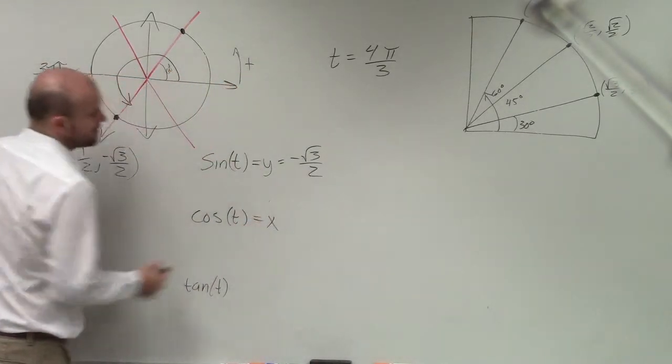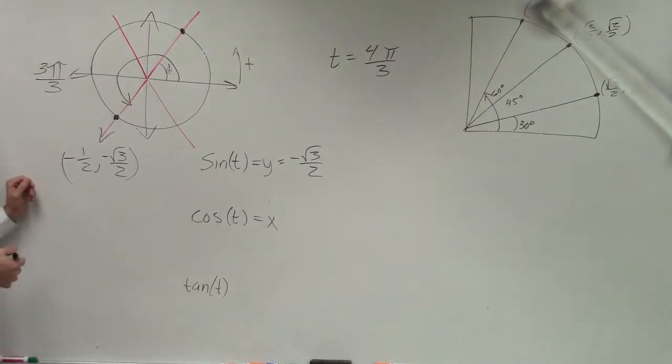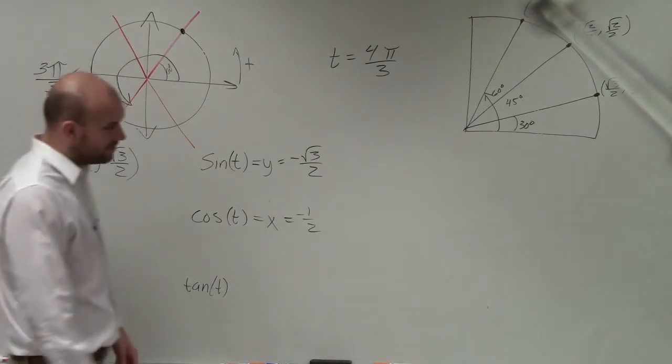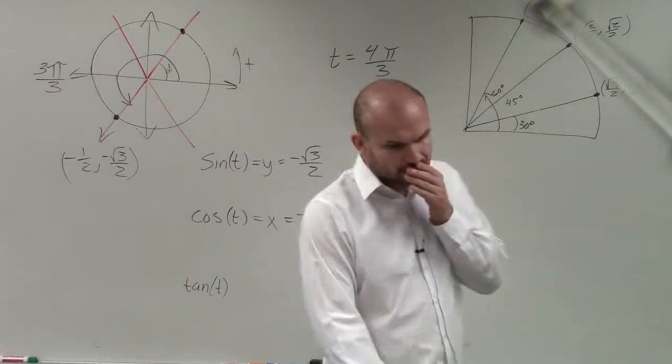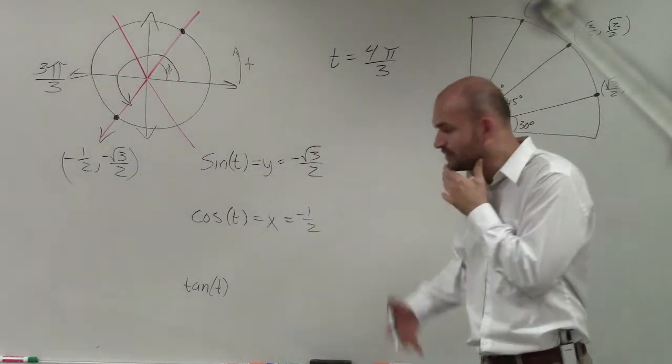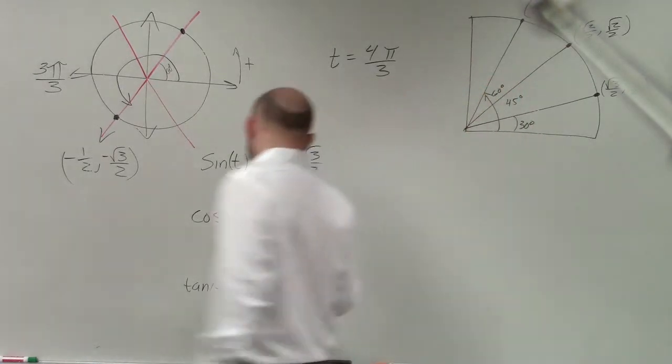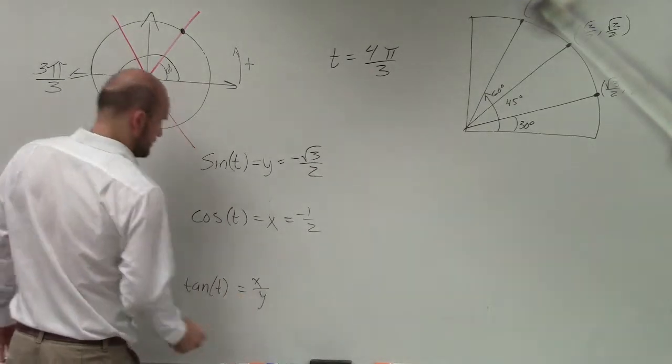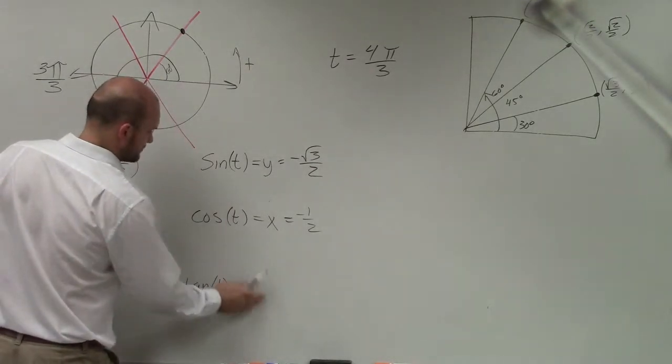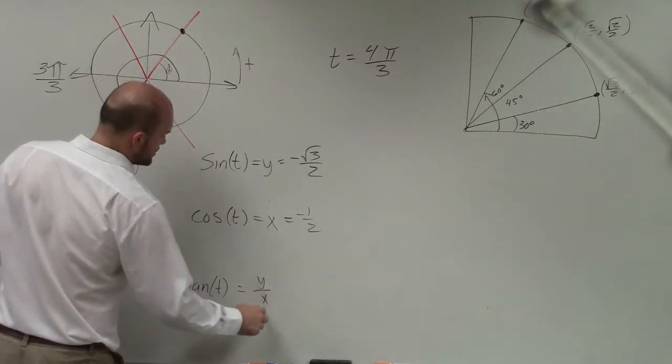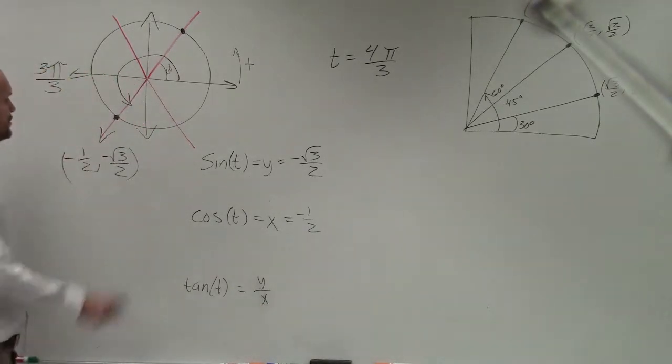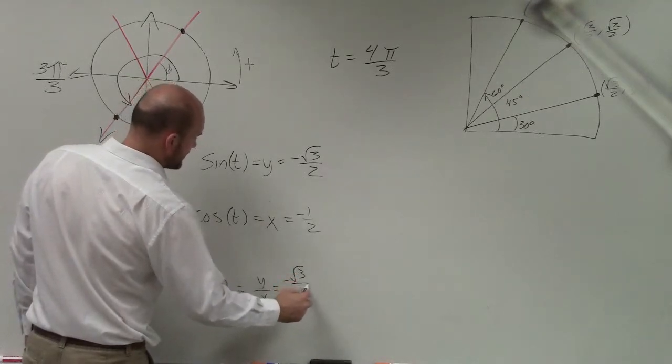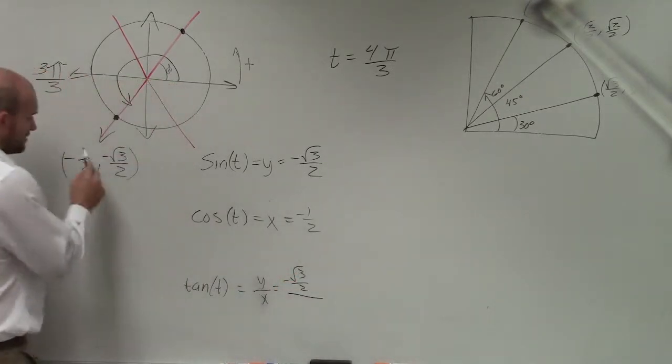Cosine, only on the unit circle, is represented by our x value of our point, which is equal to -1/2. Tangent, which is on the unit circle, is represented by y over x, opposite over adjacent. So our opposite, that's going to be -√3/2 divided by -1/2.